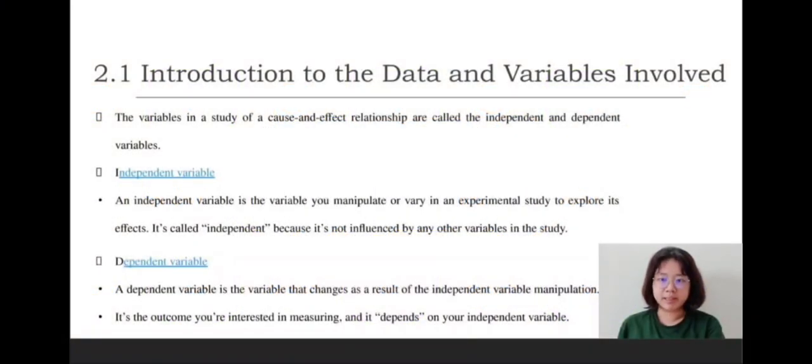Good morning, Madam. My name is Wong Wenying. My matric number is H2182016. Now I want to present about introduction to the data and variables involved. The variables in a study of cause and effect relationships are called independent and dependent variables. An independent variable is the variable you manipulate or vary in an experimental study to explore its effect. It's called independent because it's not influenced by other variables in the study.